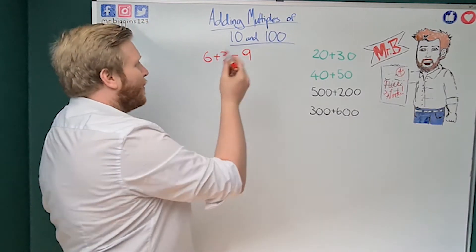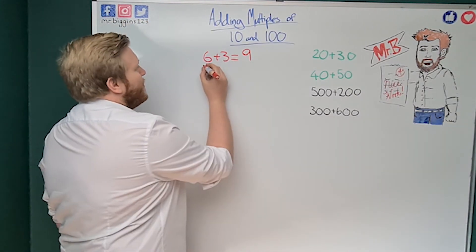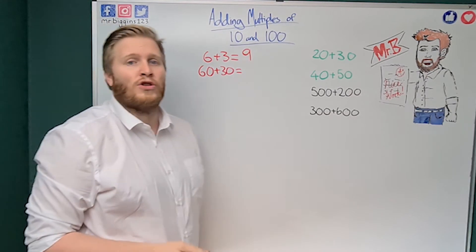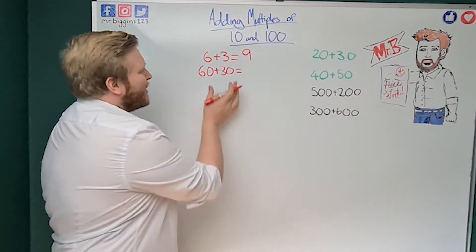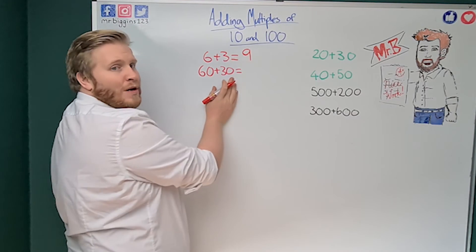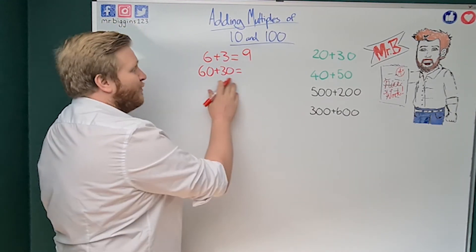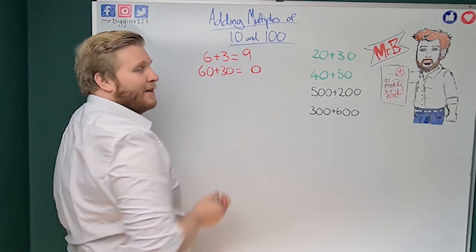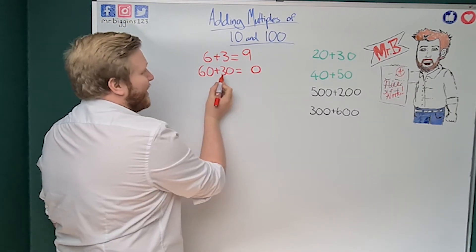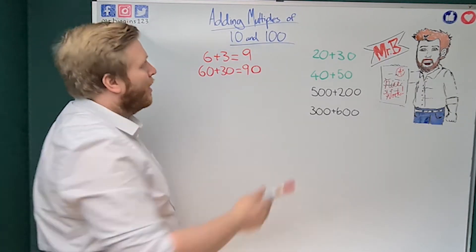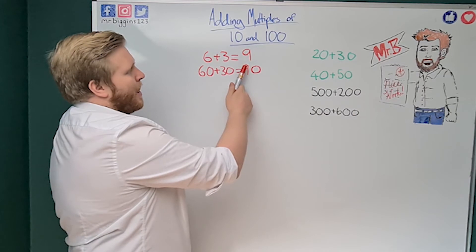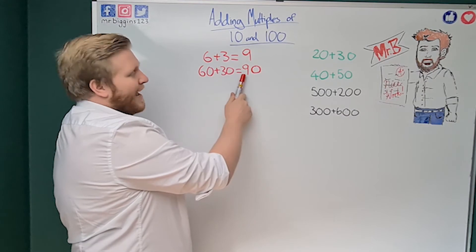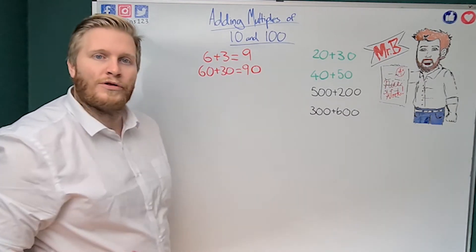Now we're going to use what we know about that to work out another question. Here's the sum: 60 plus 30. That looks like a harder sum, but actually it's the same thing. In my ones column I have zero plus zero, which is zero — that stays the same. So now all I need to do is my six tens plus my three tens, which is nine — the same nine as before. Six ones and three ones make nine ones; six tens and three tens make nine tens.